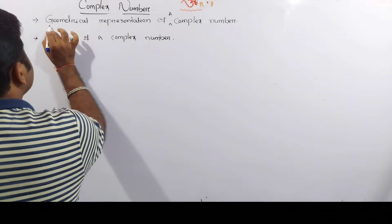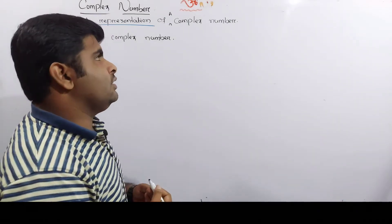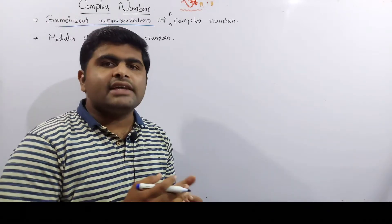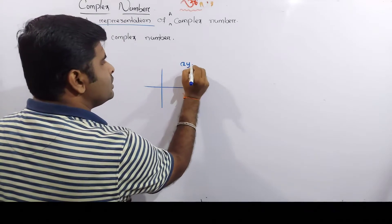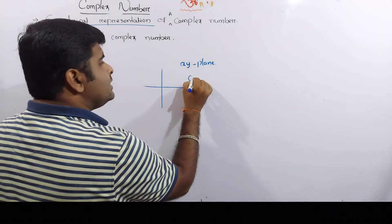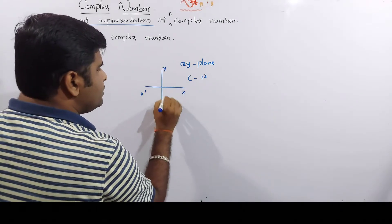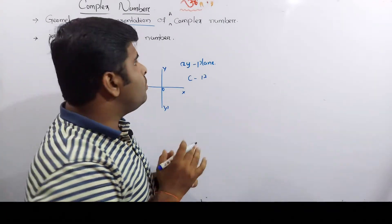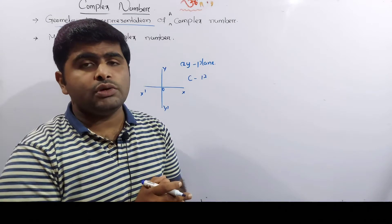First, we have the concept of the geometrical representation of a complex number. Our number is x and y. We have the xy-plane — the Cartesian plane. There is x, x', y and y', and the origin. We define the xy-plane and Cartesian plane. If you want to represent a complex number, you can represent it on the Argand plane.